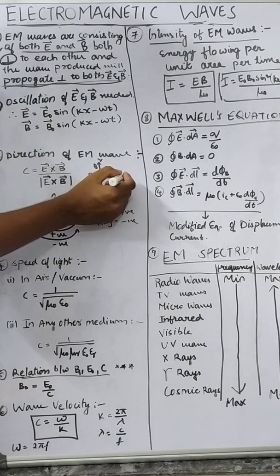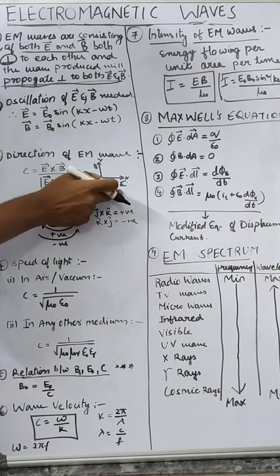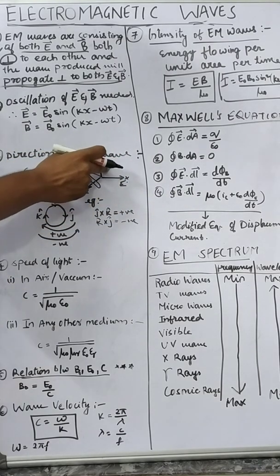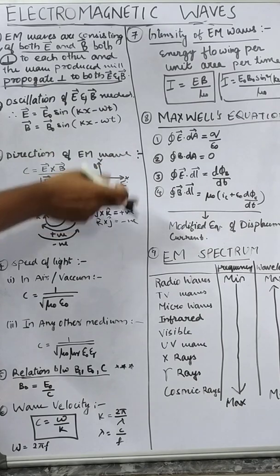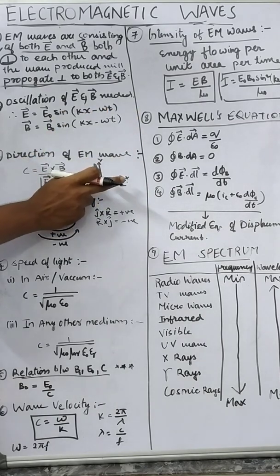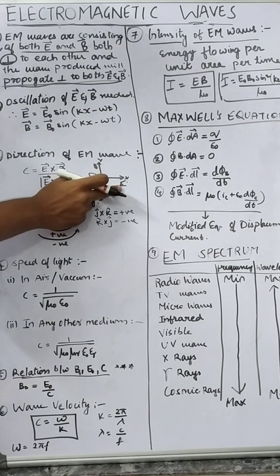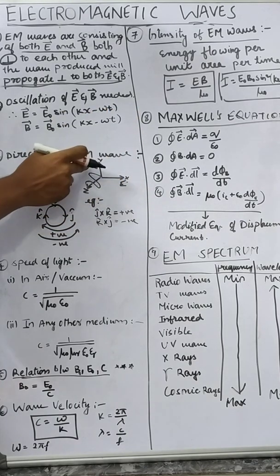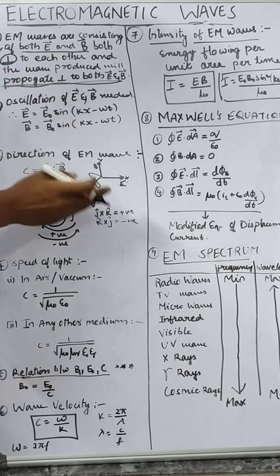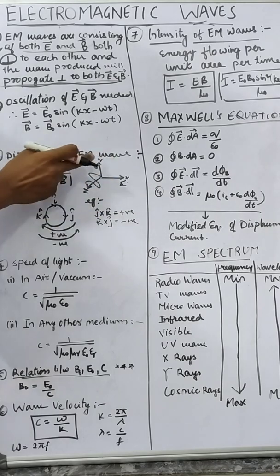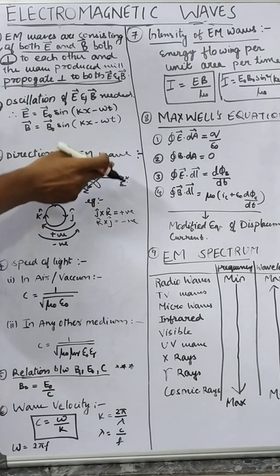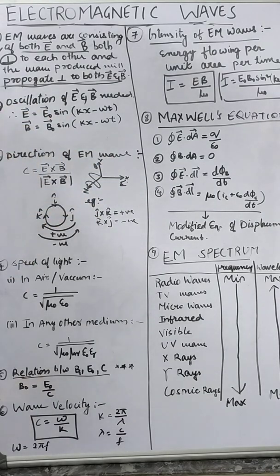One electric field is on the X axis and Y axis. Electric field is on the X axis. Then magnetic field is on the Y axis. Then magnetic field is on the X axis.